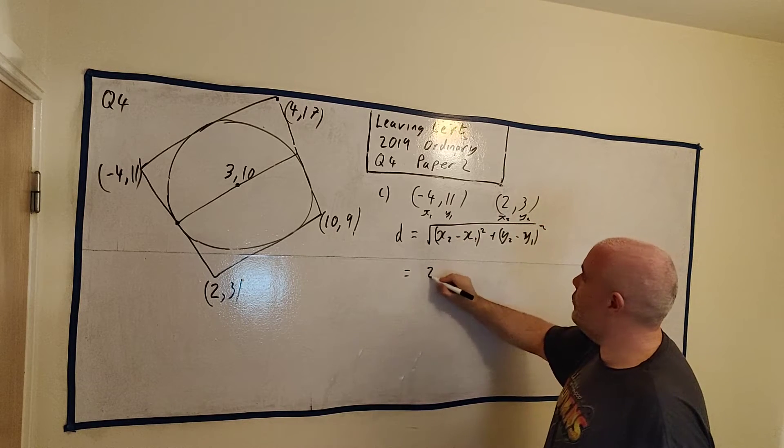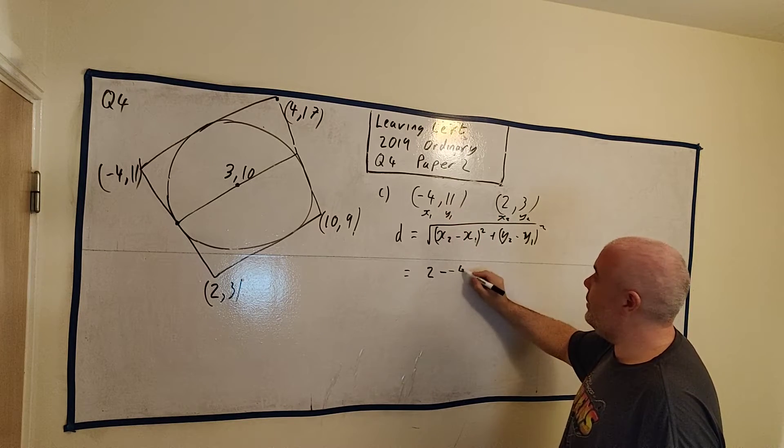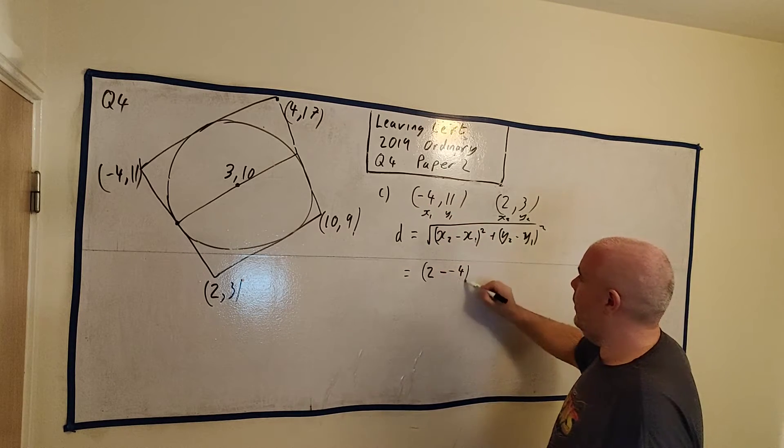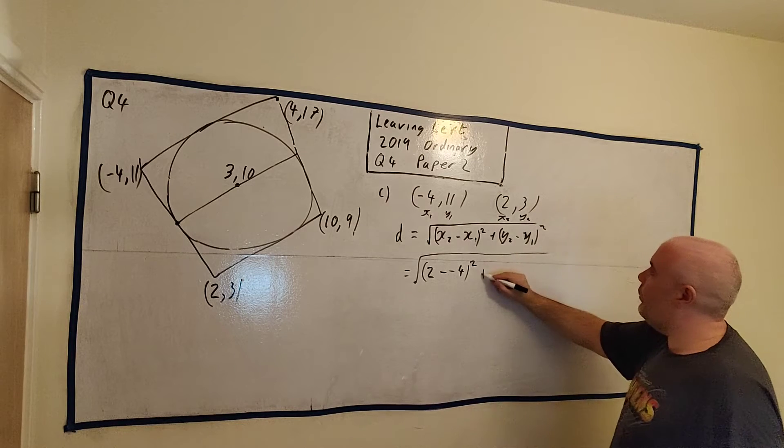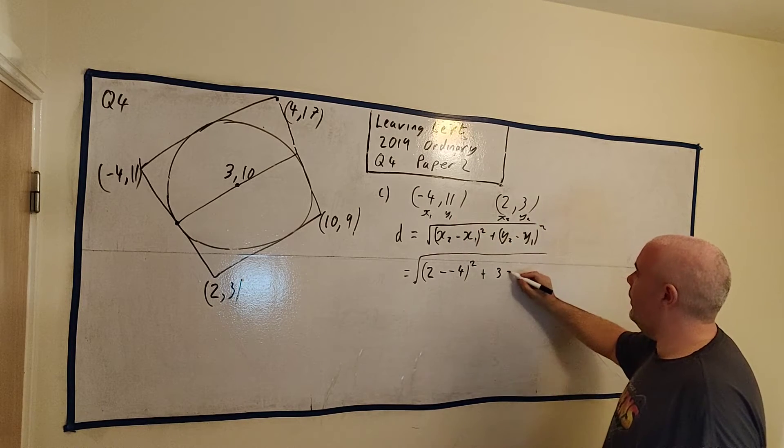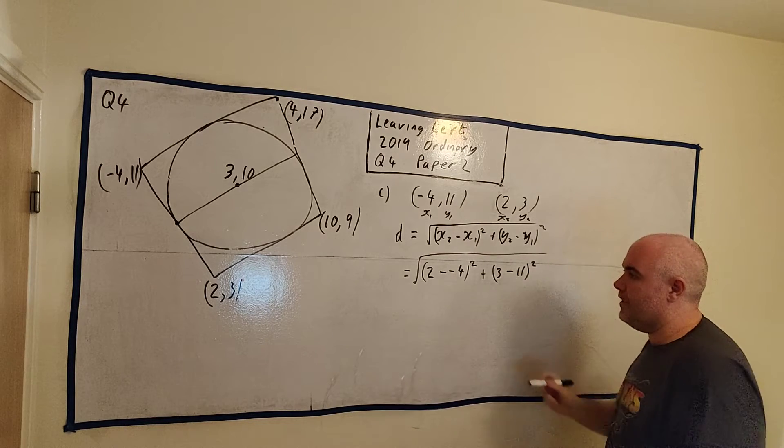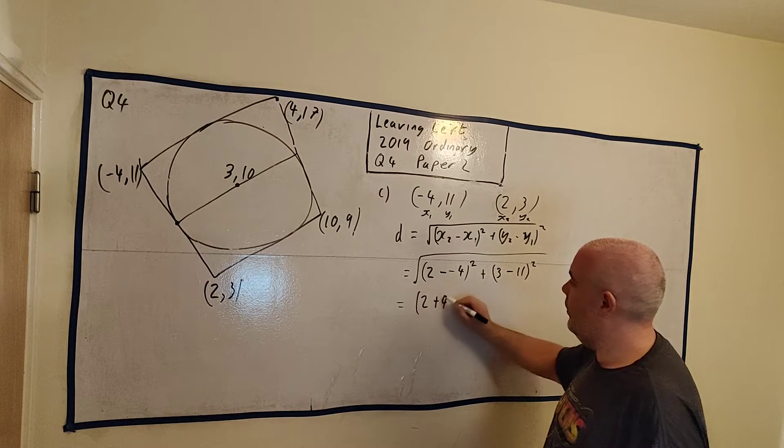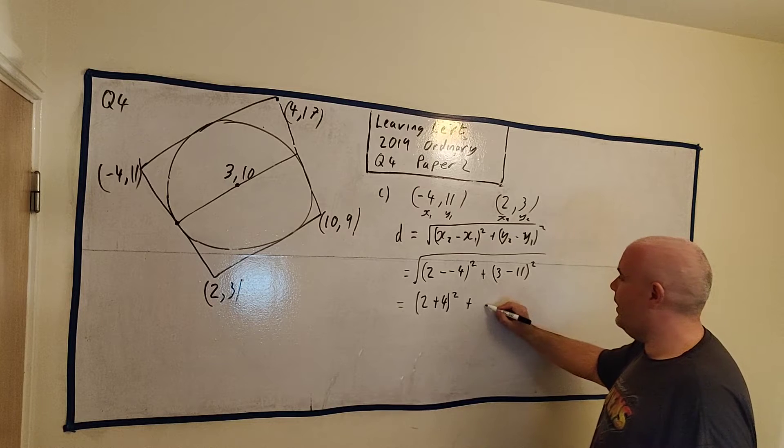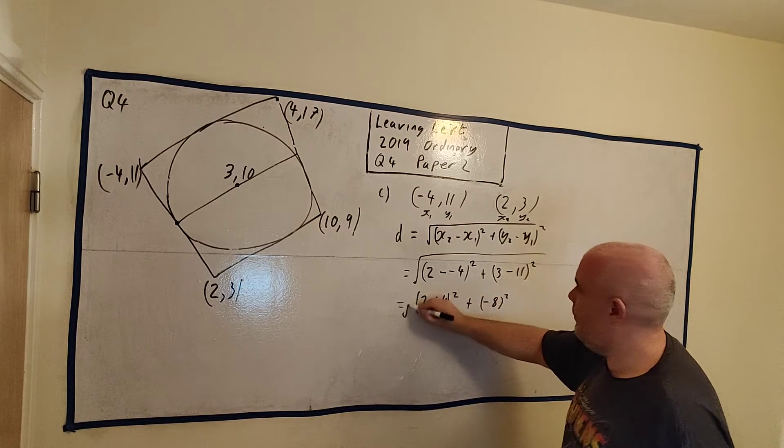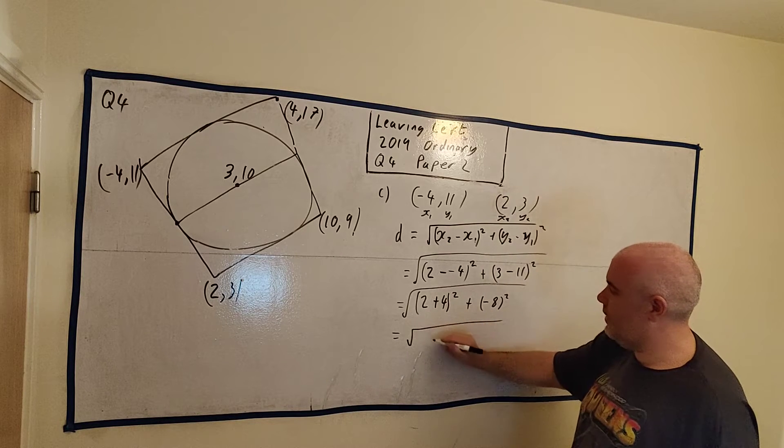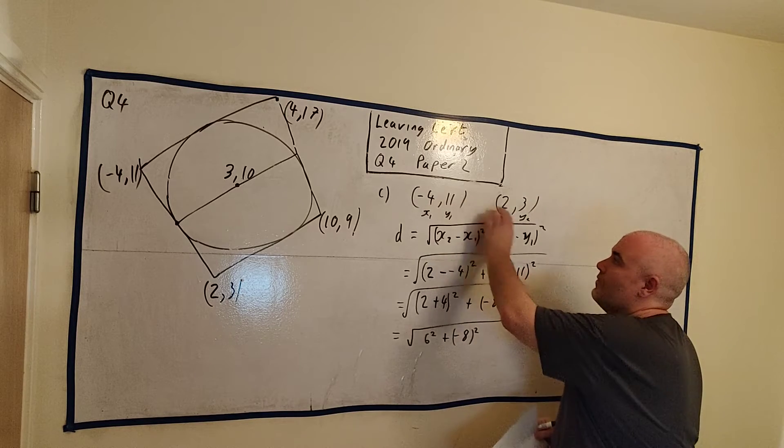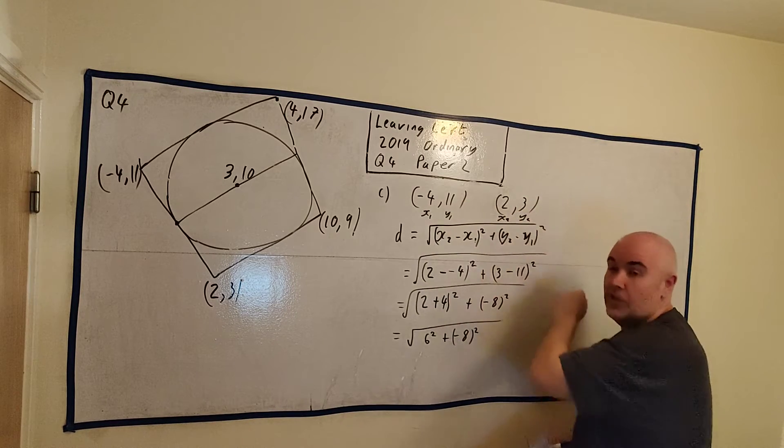So this is equal: x2 is 2 minus x1 is minus 4. Notice there's two minuses. One minus was from here, the other minus was with the minus 4. This is all squared, plus y2 is 3, and y1 is 11, that's squared. Let's clean some of this up. This is minus minus 4, which is 2 plus 4. 3 minus 11 is minus 8. Maybe that's 6 squared plus minus 8 squared. So I said the distance between minus 4 and 2 is 6, and the distance between 11 and 3 is 8.